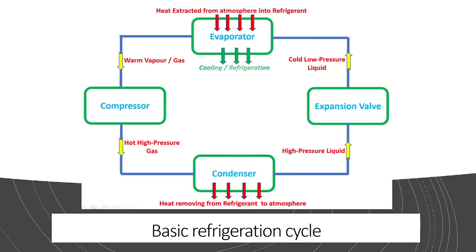If we consider the basic cycle of refrigeration, we can see a compressor which compresses the refrigerant gas, and then it passes through a condenser where the heat from the gas is extracted. Then this cooled-down gas becomes liquid. This liquid is passed to an expansion valve where the high pressure of this liquid is reduced to a low pressure value.